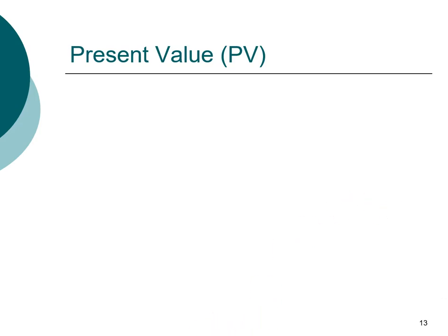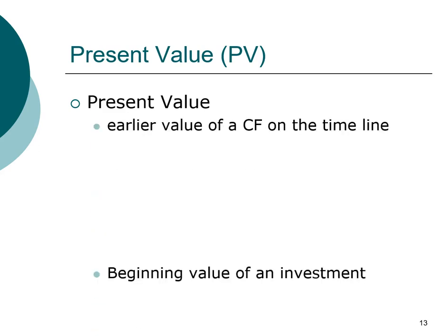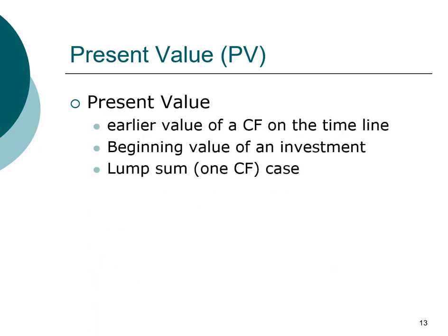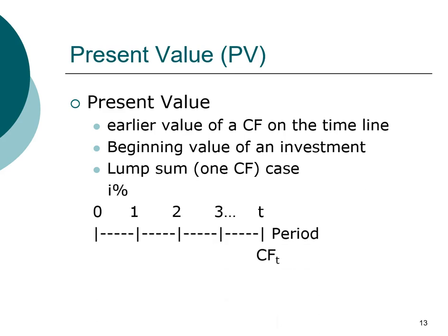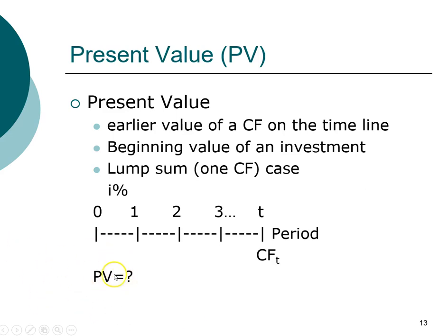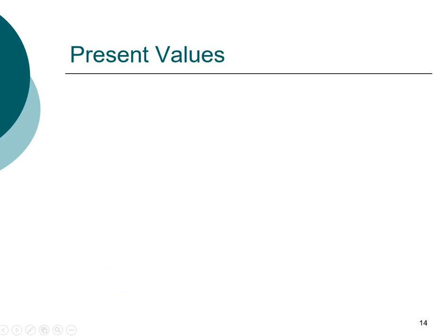Welcome back. Present value refers to the earlier value on the timeline, so oftentimes this is at the beginning of the investment horizon. In this chapter we are working with lump sums, meaning we only have a single cash flow. You can think of it as the present value being the money you start with — the amount in the future you want to find out how much is worth today. For example, you have an opportunity to make an investment and they promise to pay you $100,000 in ten years — how much would that investment be worth today?